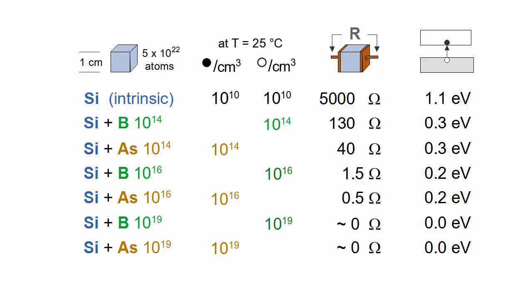For example, a boron concentration of 10 to the 14 creates 10 to the 14 holes and reduces the mobile electrons to 10 to the 6th. In general, the product of the electron and hole concentrations is 10 to the 20. This is the law of mass action the same as in pH chemistry.